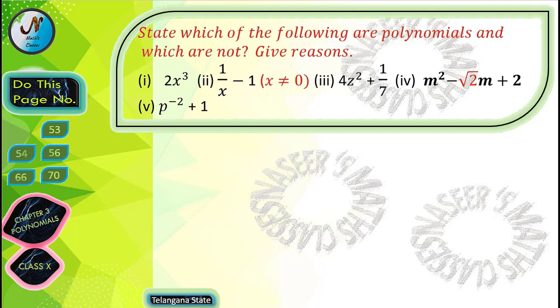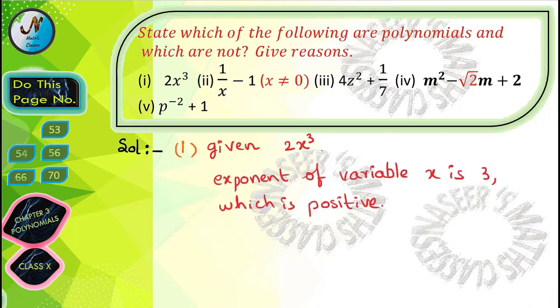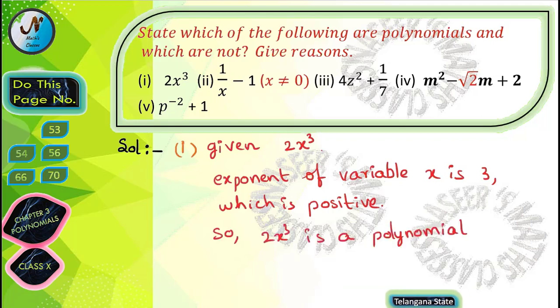So first expression is given as 2x³. Here the exponent of variable x is 3, which is a positive number. So 2x³ is a polynomial.